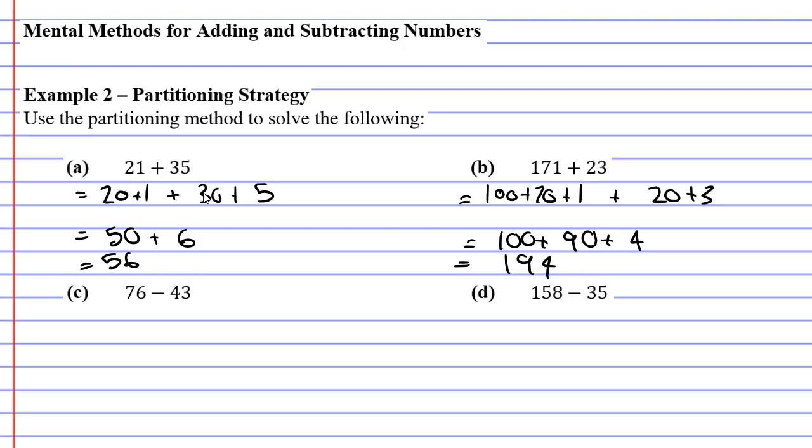Now question C and D both involve subtraction. So this is what we're going to do. 76 is 70 plus 6. And then we're going to subtract 40. And we're also going to subtract 3. So both the 40 and the 3 need to have a minus when you do these. So 70 minus 40 is 30. And 6 minus 3 is 3. And at the very end, you're just going to add them together. You get 33.